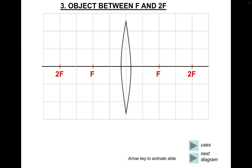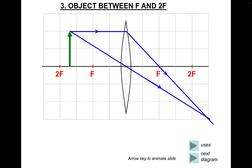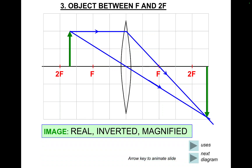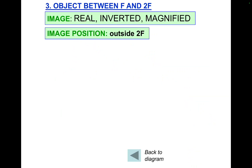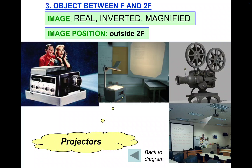Object between F and 2F. The object goes between F and 2F. Follow the rules again: parallel to the principal axis, refract through F. Second ray straight through the optical centre, undeflected. Where the construction rays meet, that's where we get our image. It's on the opposite side of the lens so it's real; it's upside down so it's inverted; and it's larger than the object so it's magnified — real, inverted, magnified. Use: projectors. You get big, inverted, real images — and remember, real images can be projected onto a screen.